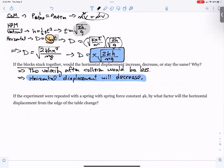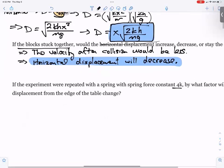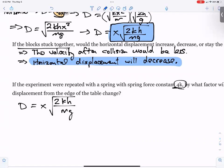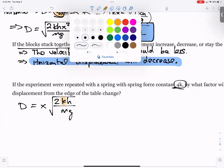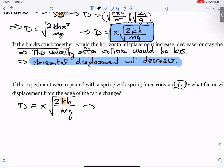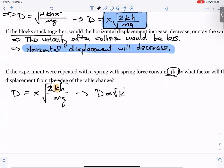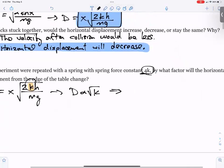If the experiment were repeated with a spring with spring force constant 4k, by what factor will the horizontal displacement from the edge of the table change? So here we do, we start with the actual expression that we came up with. D is equal to x times the square root of 2k h over m g. Now the only thing that changed is k. Everything else stayed the same. So ultimately what that does, if everything else stays the same, I would replace every other variable with the number 1. But that essentially tells us if the only thing that's changing is k, that means displacement is directly proportional to the square root of k. So the displacement is going to be proportional to the square root of 4k.